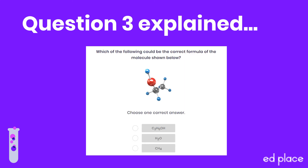Next, let's take a look at the image in question three. Looking closely at the molecule, we can see it has two grey atoms representing carbon, six blue atoms representing hydrogen, and one red atom which is oxygen. It has three elements combined to form the compound, so it can't be H2O or CH4, as they both contain just two elements. The molecule shown is ethanol, better known as alcohol.